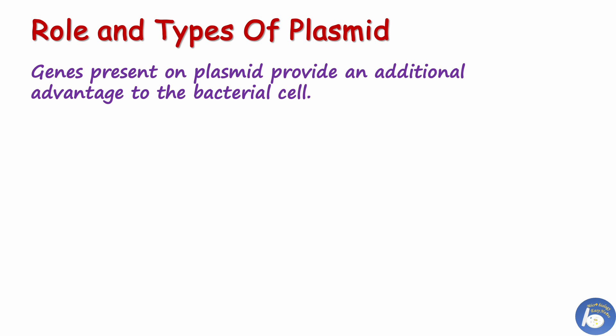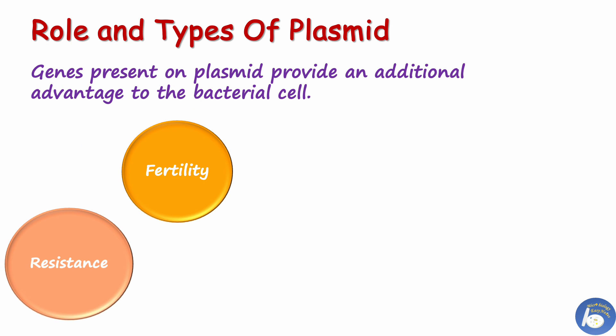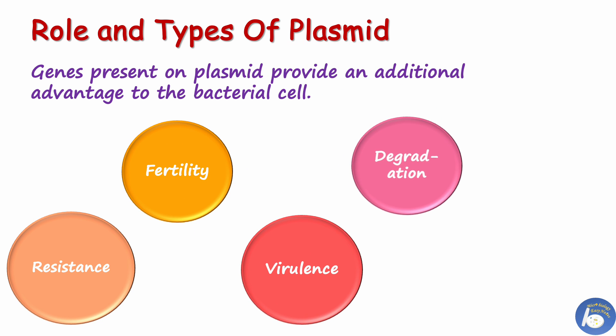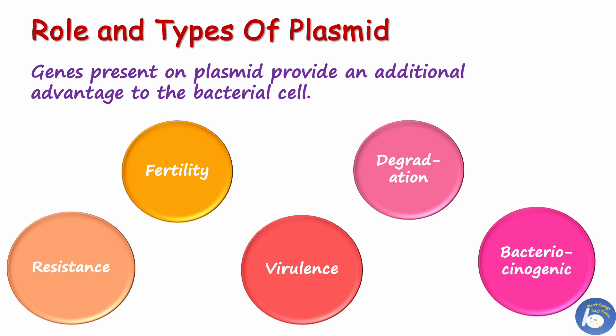So what is the role of plasmid in the cell? Plasmids usually carry at least one gene, and many of these genes provide an additional advantage to the host cell. Different types of plasmids carry out different genes with various functions. The types are: fertility plasmid (F plasmid), R plasmid (resistance plasmid), virulence plasmid, degradation plasmid, and bacteriocinogenic plasmid, also known as colicin plasmid.